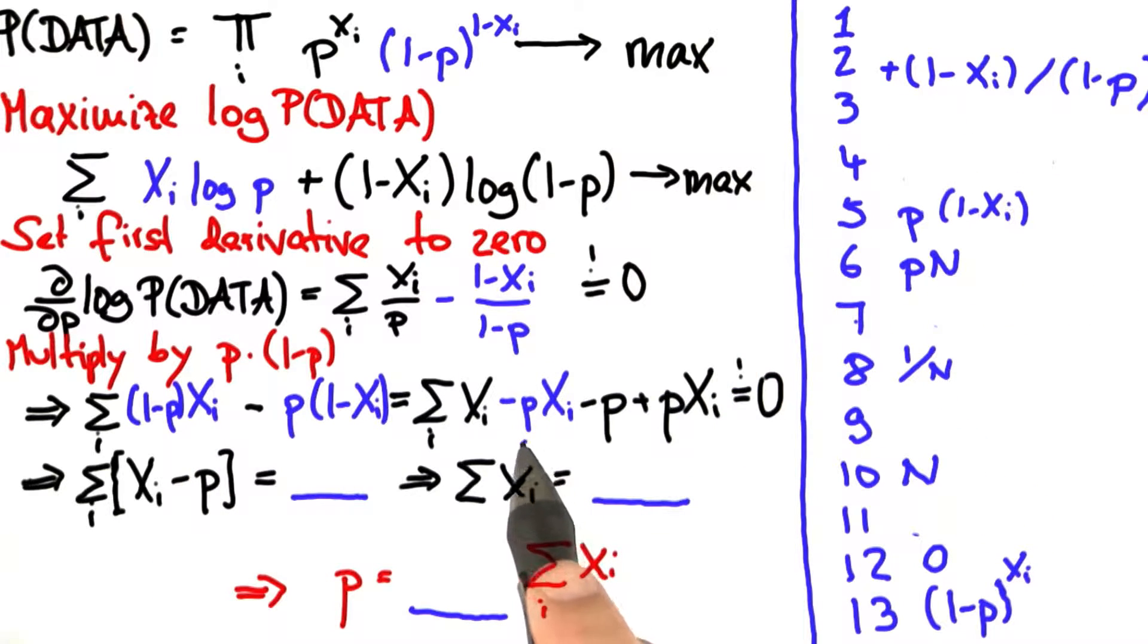Now we observe that these minus p xi and plus p xi cancel each other out. So we get this expression over here equals 0, which is number 12.